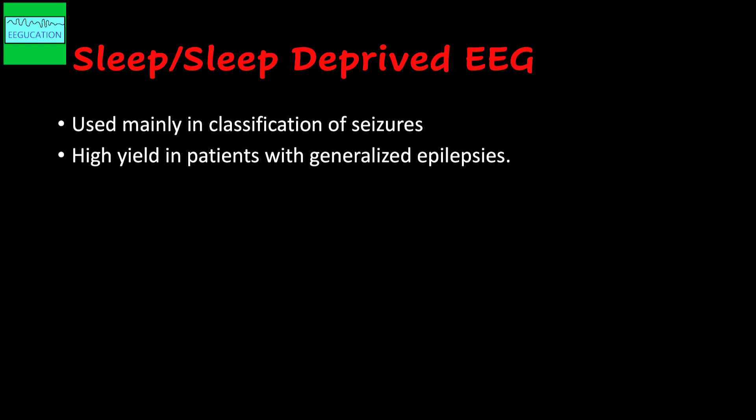Now, what about sleep EEG or sleep-deprived EEG? Sleep EEG and sleep-deprived EEG are not exactly the same. Sleep EEG is where you capture some sleep during the EEG — the transition from wakefulness to sleep helps identify epileptiform discharges, because during that transition both focal and generalized epileptiform discharges start showing up. I use sleep-deprived EEG — not completely depriving the patient, but partially — mainly in classification of seizures where classification is still unclear and to optimize medications. I find sleep-deprived EEGs have a very high yield in patients with generalized epilepsies.